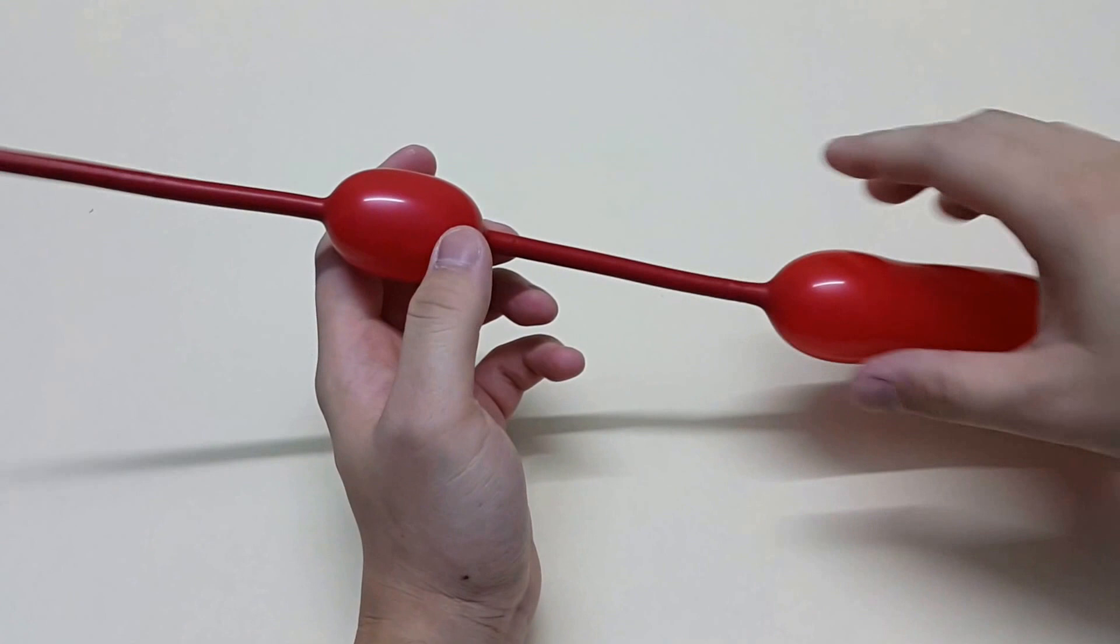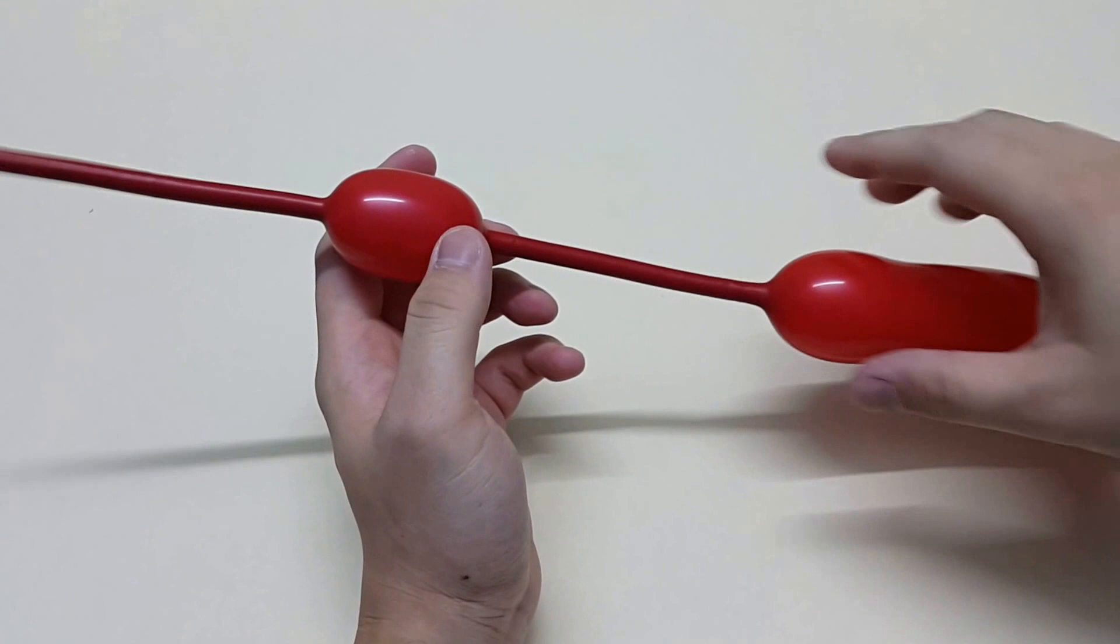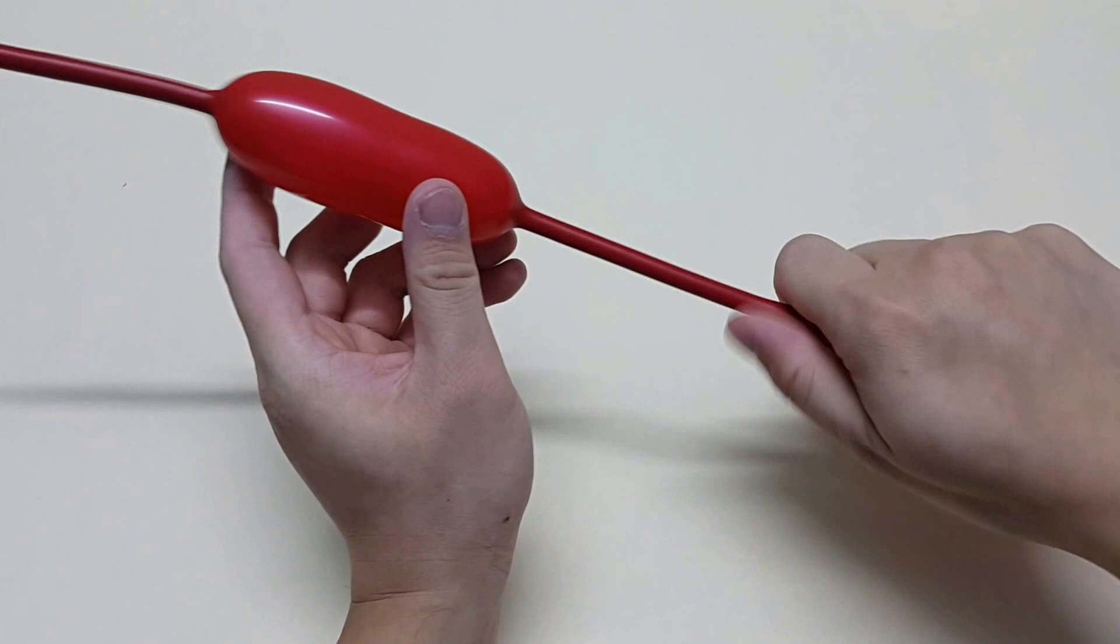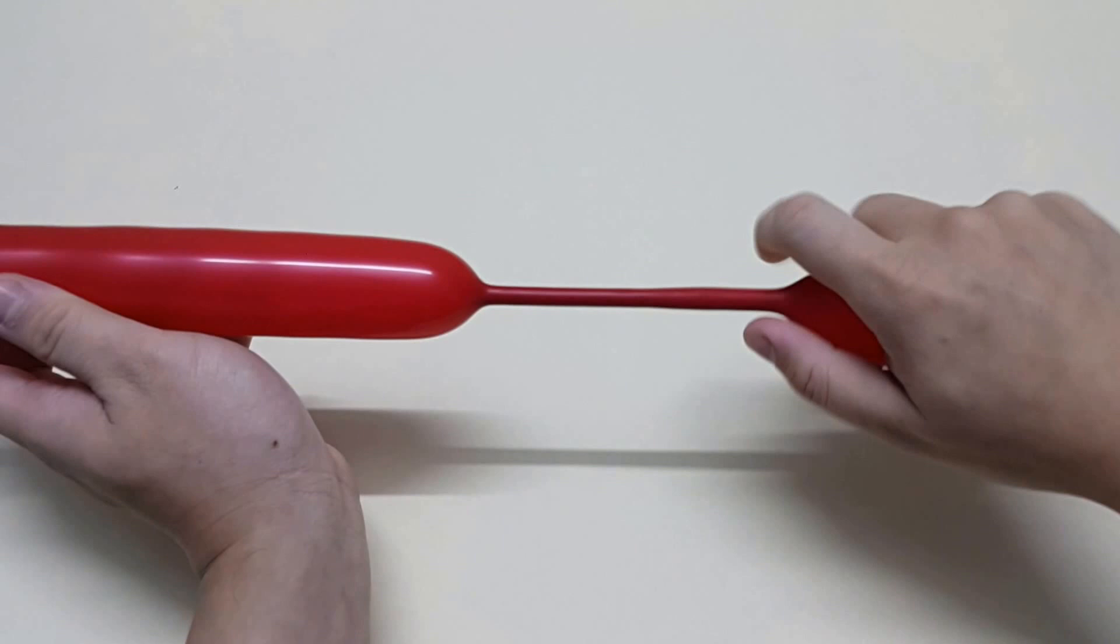So the balloon is pushed. You see when I press over here, the balloon from this other side will easily extract. So I just push the other side around. Make sure I just finished pushing everything.